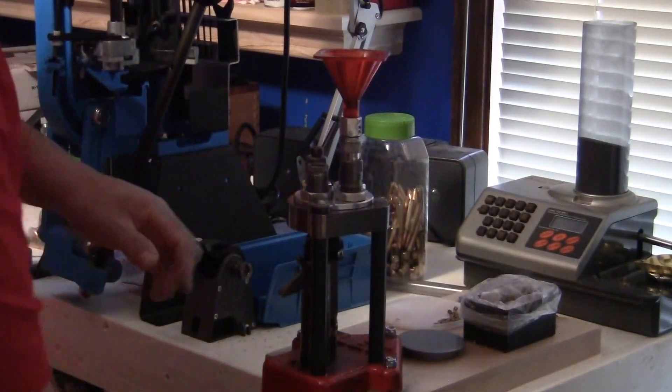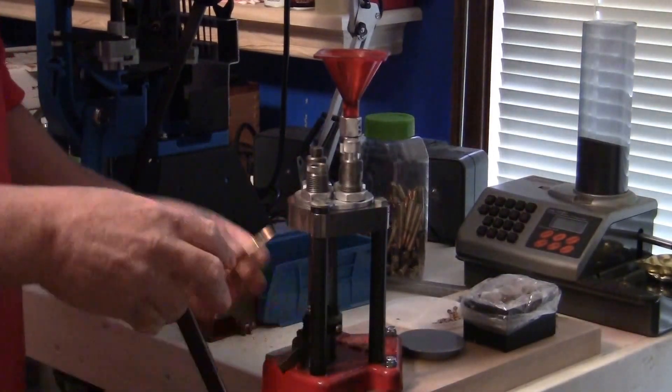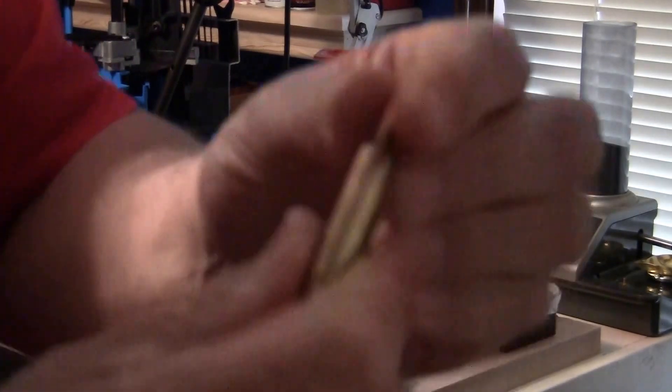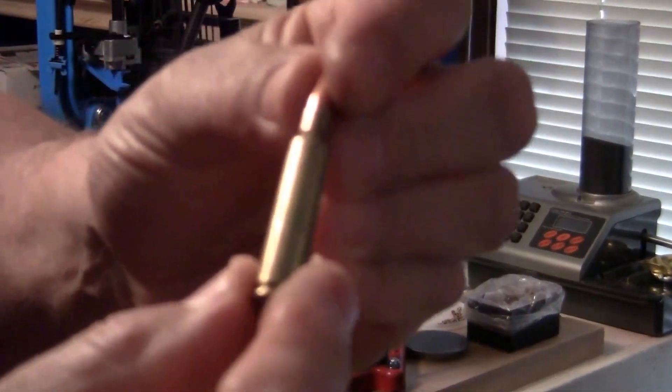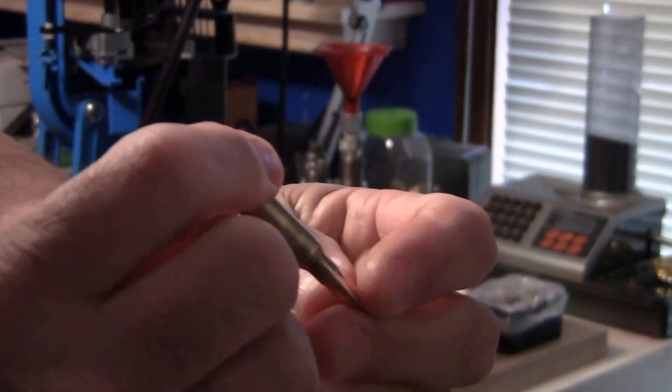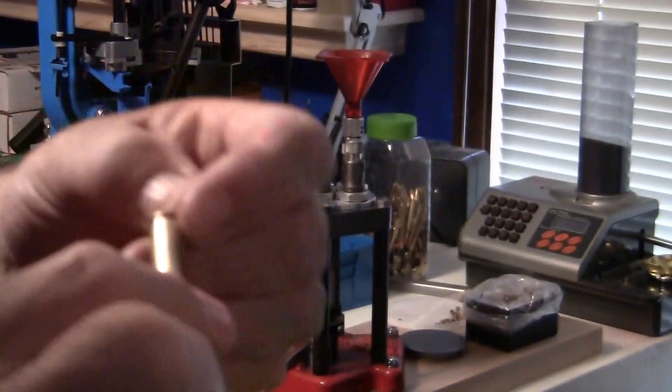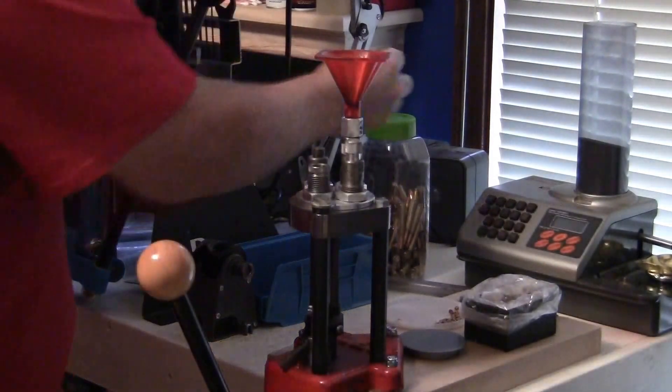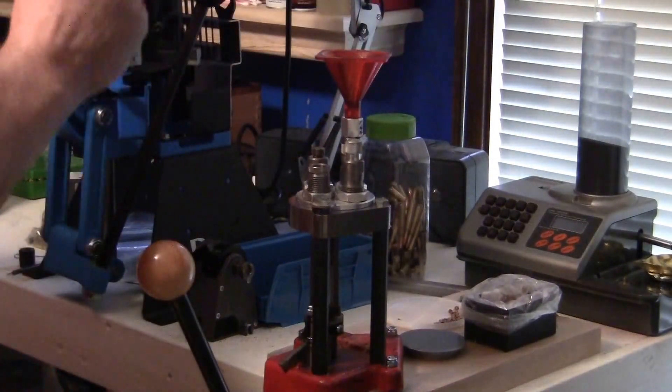Come down, and this is the factory crimp die. What it does is squeeze 360 degrees around that shoulder. Let me just clean it up real quick. So there's a loaded round. Fairly simple process. Now I'm going to shut up and just go right through the system, do it one more time.